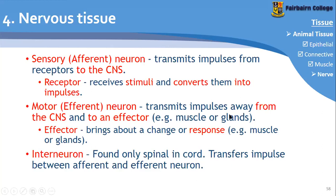Another example is a gland. When you smell or see delicious food, your brain gets signals telling you that you might be getting some food, and then your brain sends signals to your salivary glands in your mouth to start producing saliva to ready yourself for the food. That's an example of your brain sending signals via a motor neuron to your effector, which is your salivary gland. Interneurons are found only in the spinal cord and transfer impulses between the afferent and the efferent neuron — it's the connection point between the two.